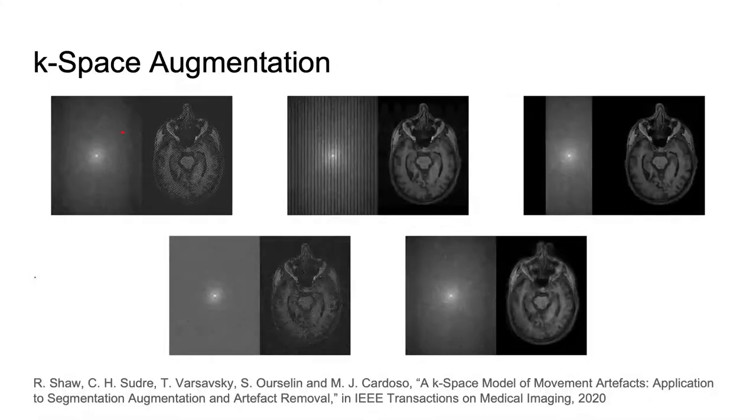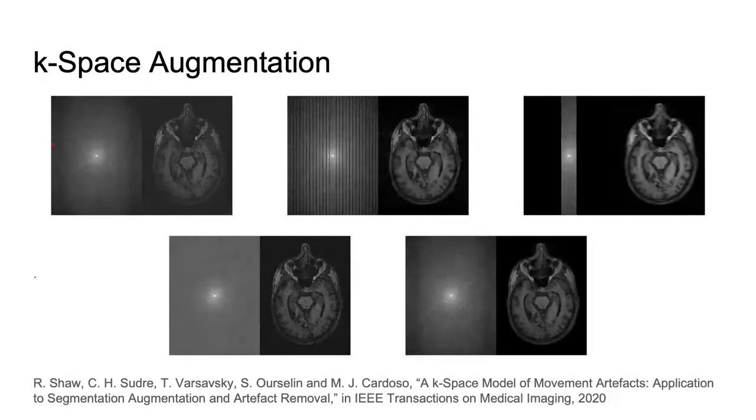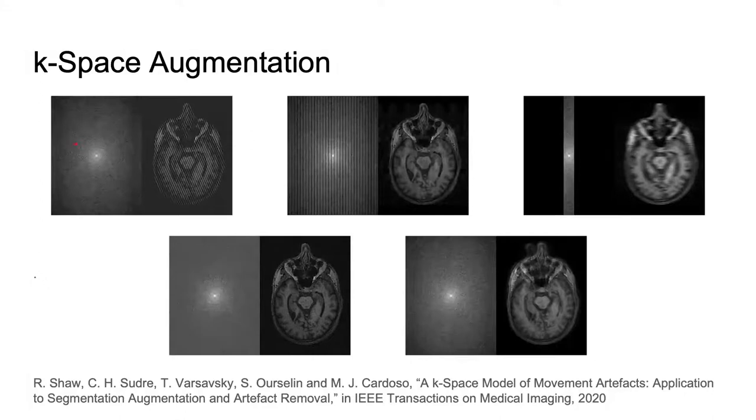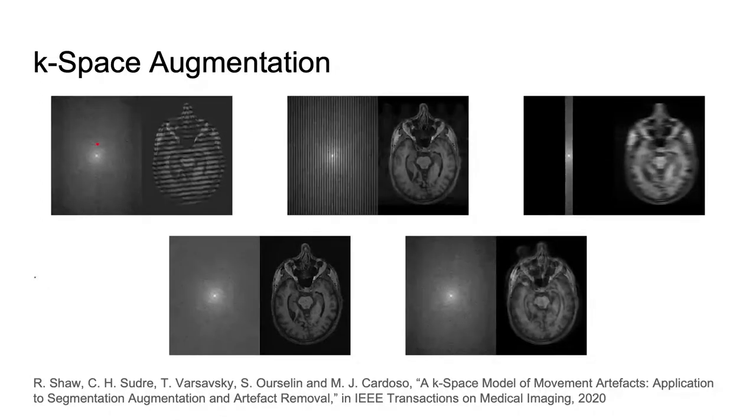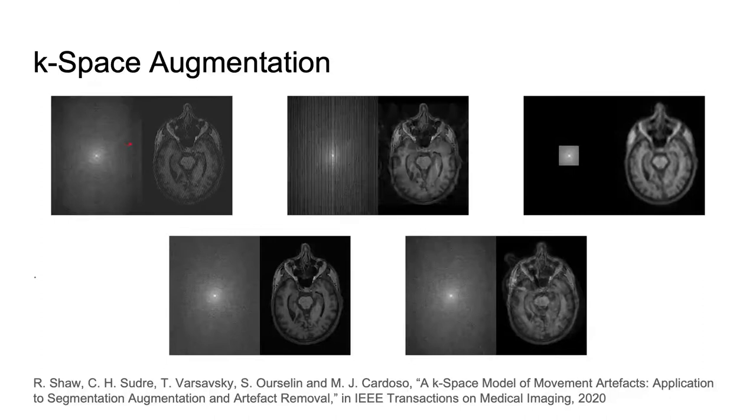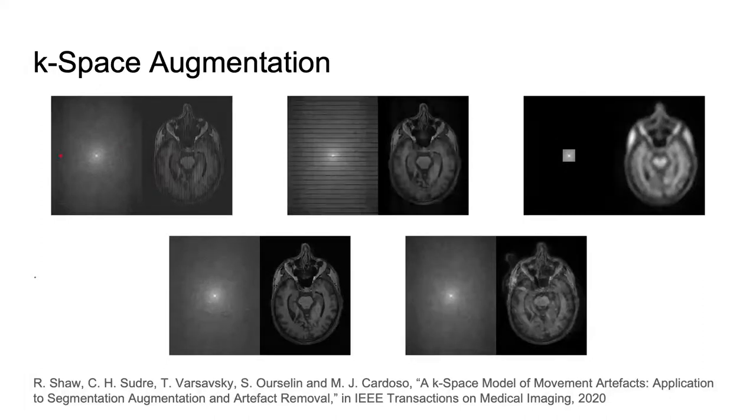Noise augmentation involves injecting Gaussian noise into the k-space to model Rician noise in the image domain. We randomly sample the signal-to-noise ratio of the image uniformly and the corresponding amount of complex noise is added to the k-space.